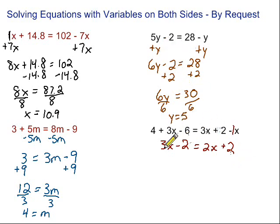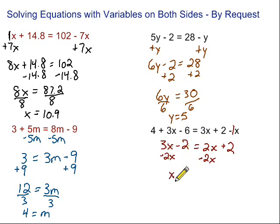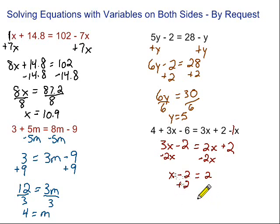Now we're in familiar territory — we've got x on both sides. Let's get rid of the 2x's by doing the opposite and subtracting 2x on both sides. 3x minus 2x is just x. Bring down what's left: x minus 2 equals 2. Our x is almost by itself, just got this minus 2. To get rid of that minus 2, do the opposite — plus 2 on both sides. x equals 2 plus 2, which is 4.